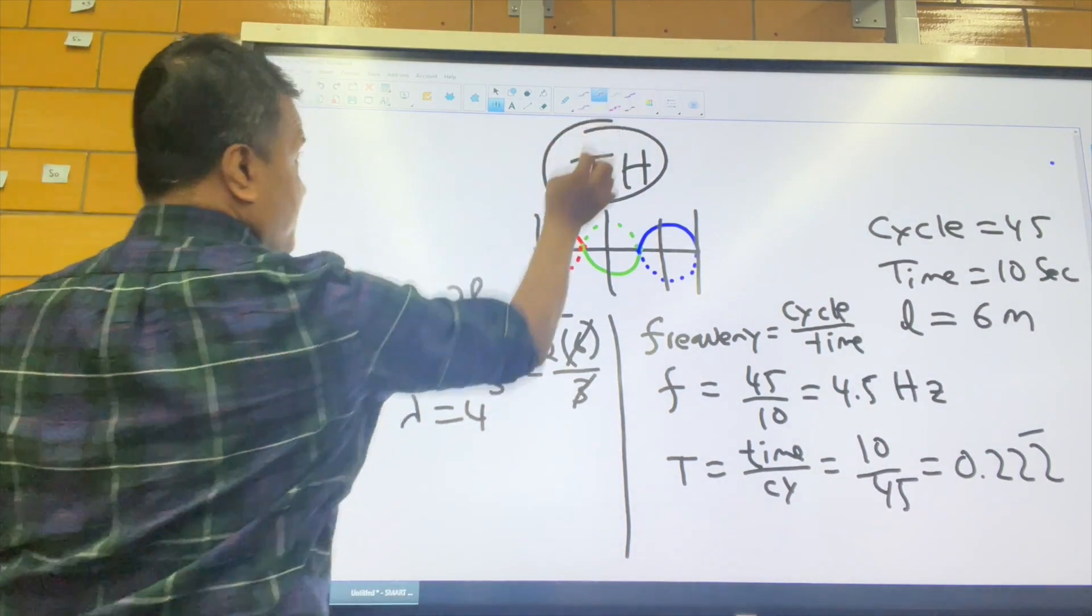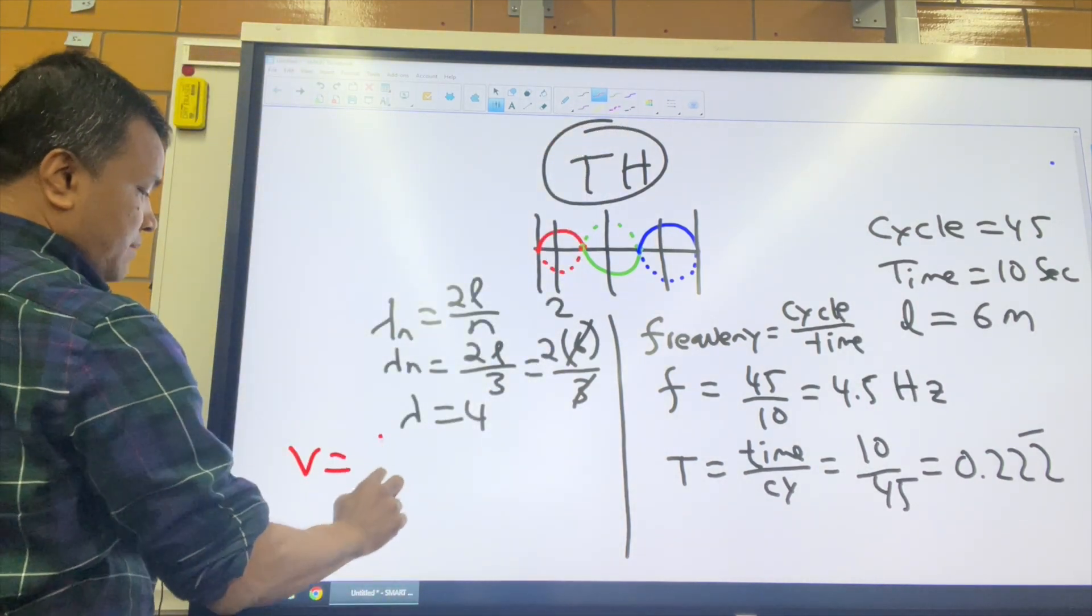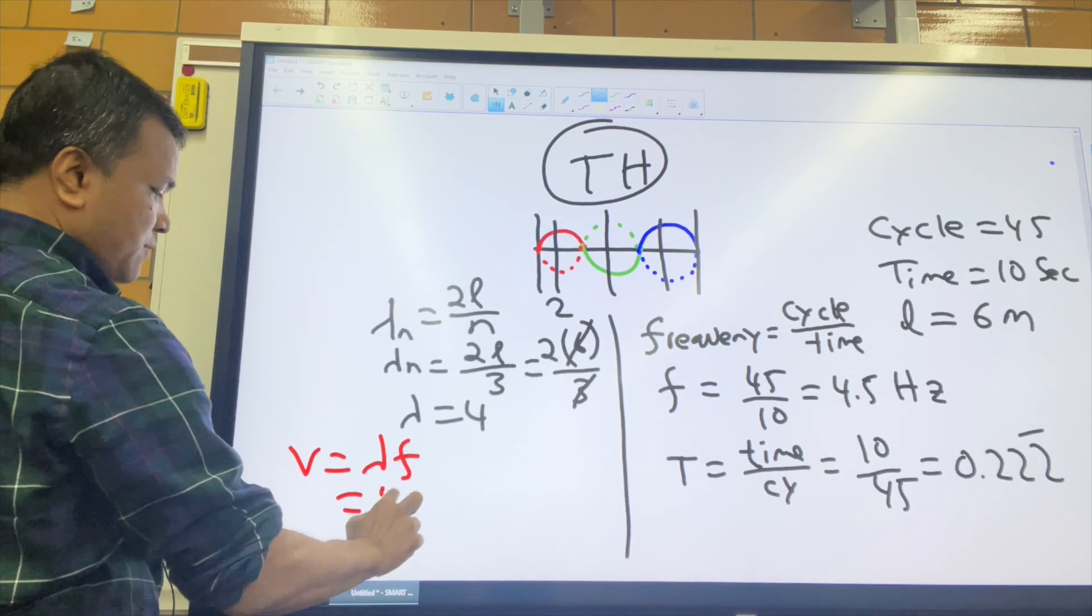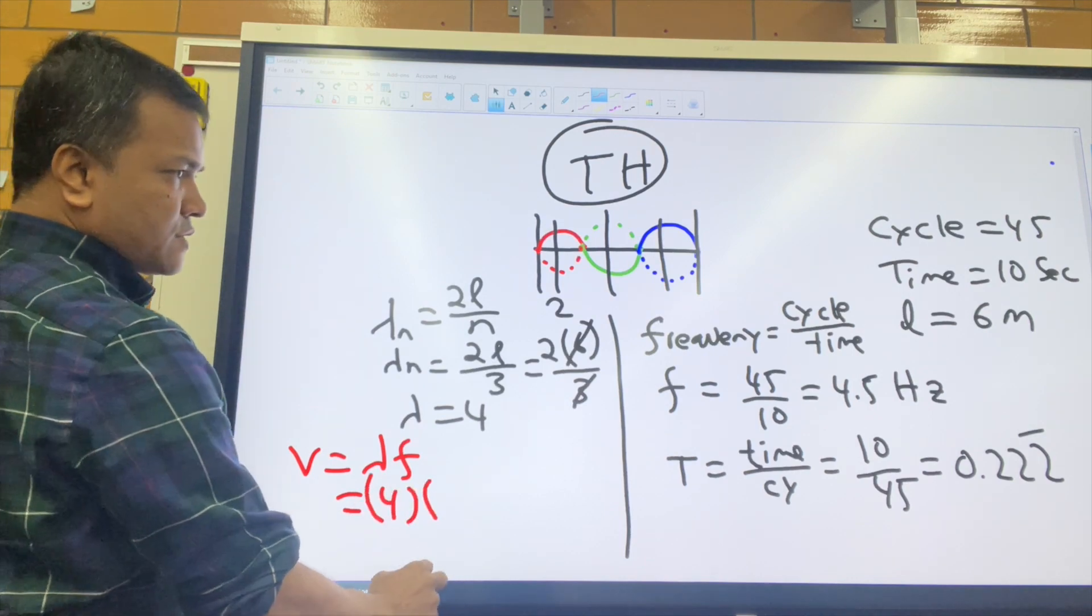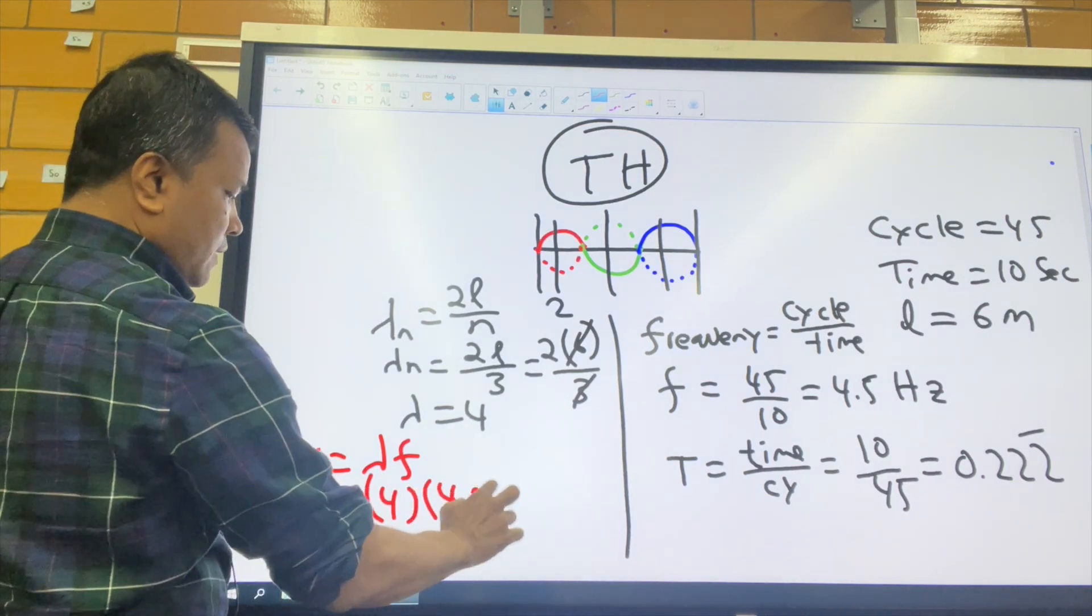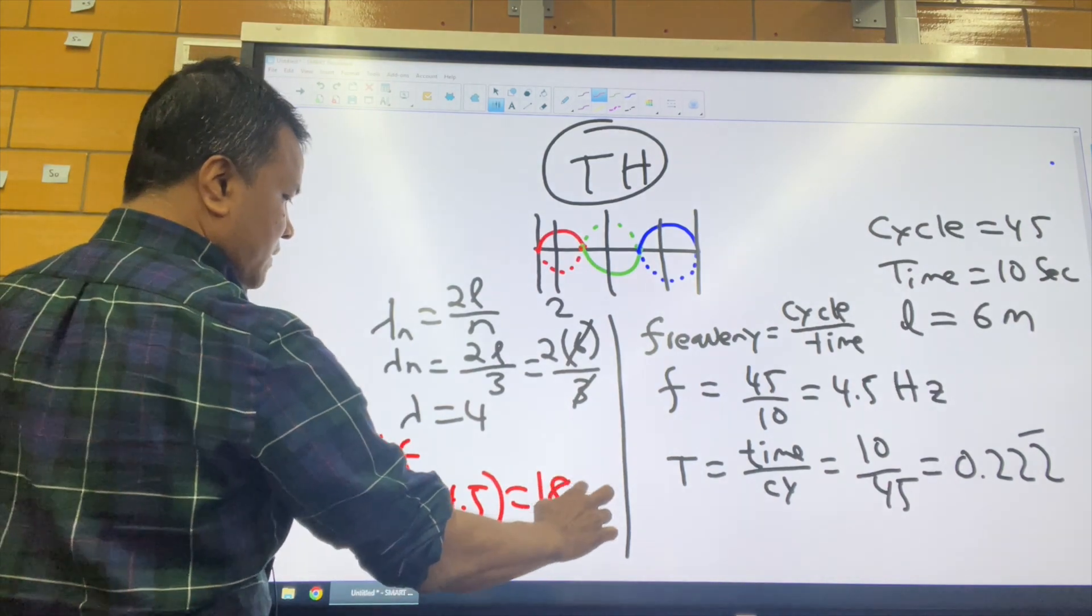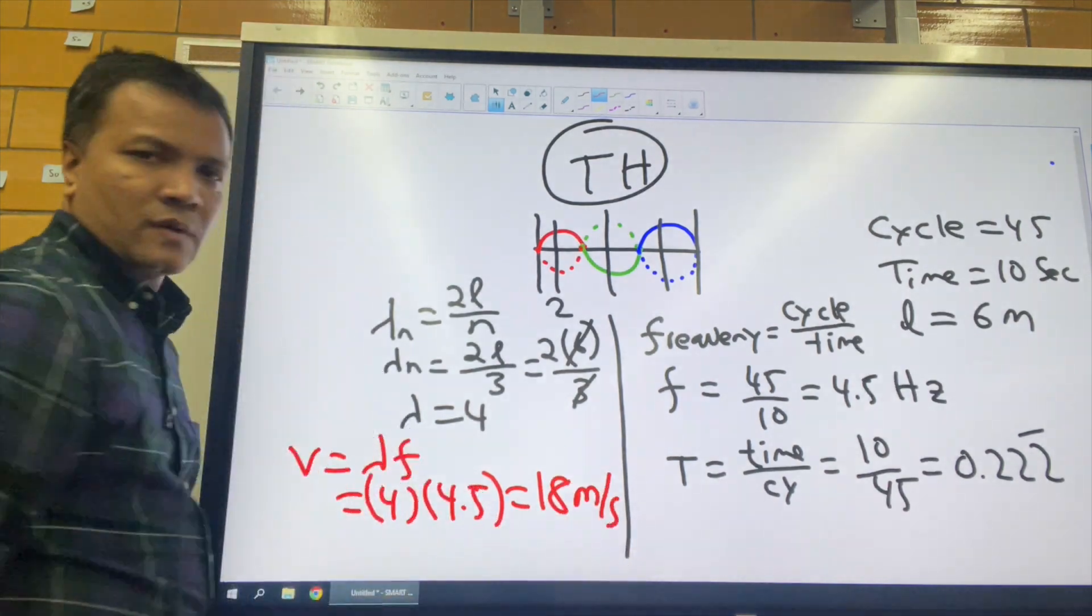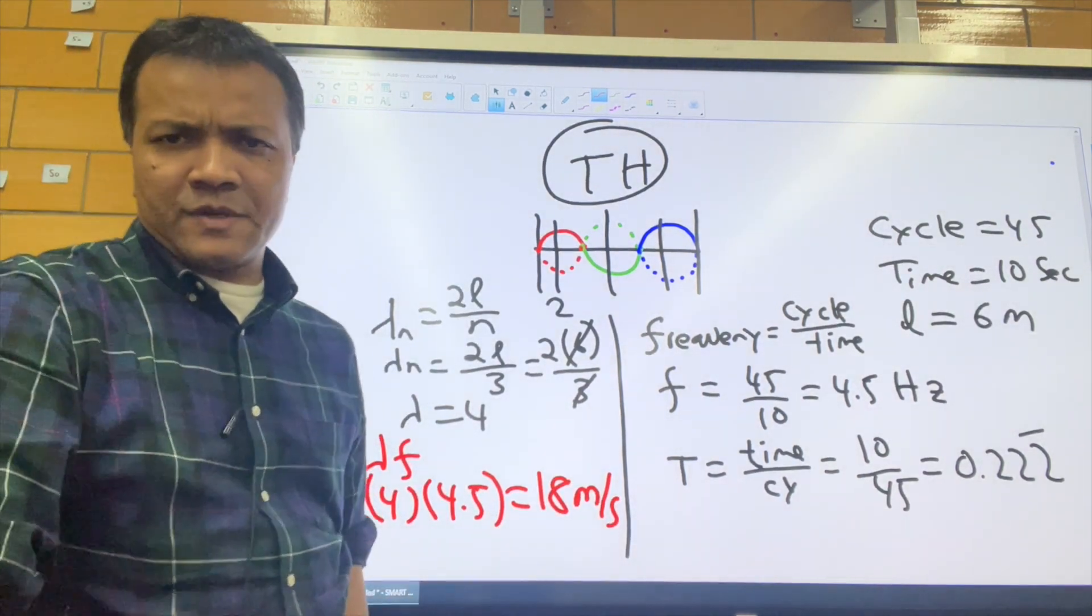Now we can find the velocity. Velocity is lambda times frequency. Lambda is 2 and frequency is 4.5, which gives us 9 meters per second. Today we learned about standing waves.